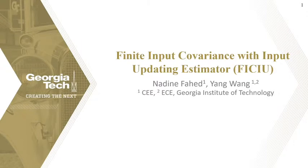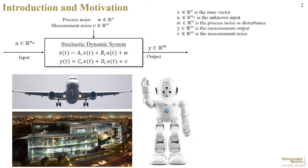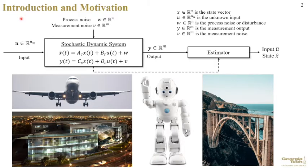This poster proposes joint input state estimation through a so-called finite input covariance with input updating estimator, also termed FICIU. Consider a stochastic dynamic system such as an airplane, building, robot, or bridge, modeled in state-space form. Input state estimation is concerned with designing an estimator that will take in your noisy output measurements y along with the state-space model of your system to provide accurate and reliable estimates of the inputs and states when they cannot be measured directly. In a substantial portion of the literature, the input is given a zero-mean Gaussian white noise distribution with some defined covariance matrix that is not known a priori. The incorrect choice of the former can deteriorate the quality of estimates and may lead to divergence from true values.